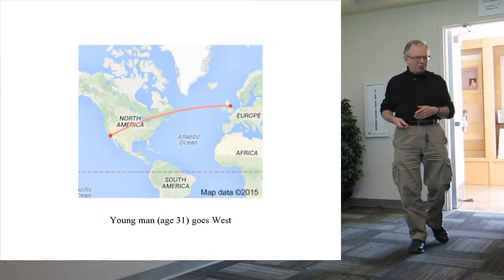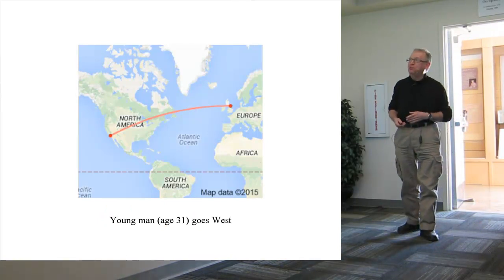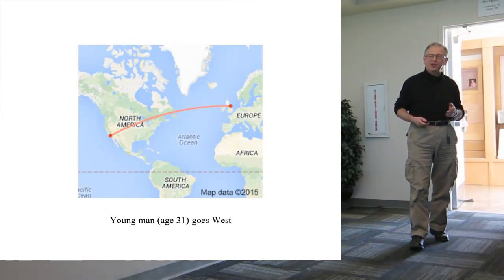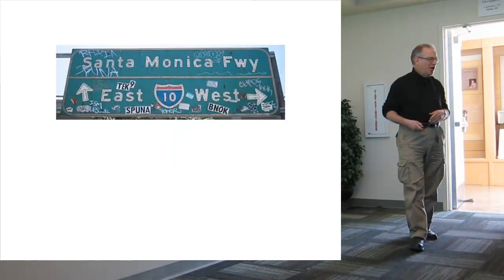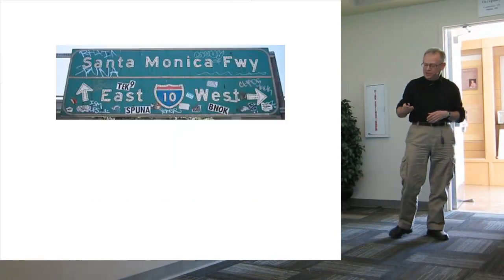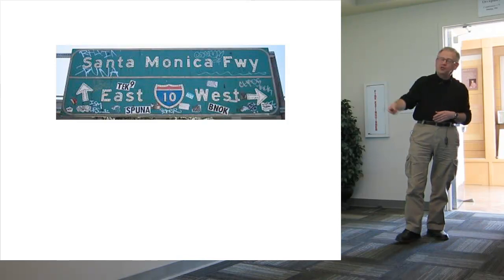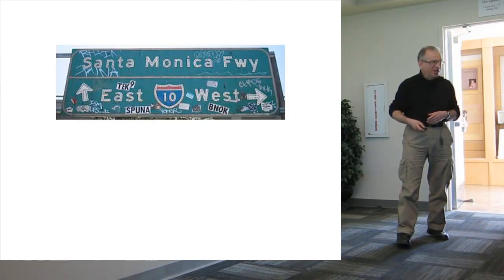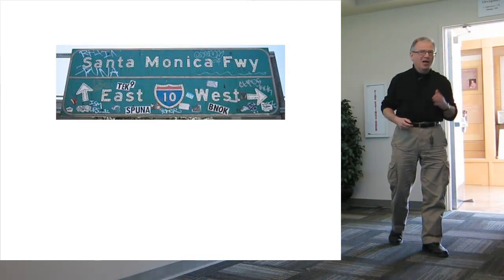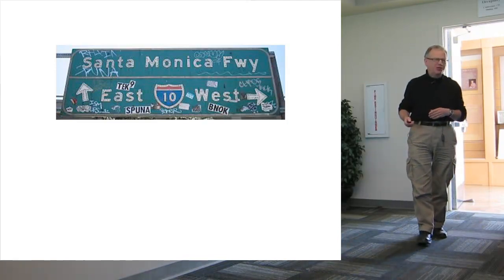It was therefore a surprise to me when in my early 30s, I did actually move west from my home in England to California, initially to Los Angeles. I would be driving on the freeway — the signage clearly telling me which way is east and which way is west — and I would consistently go the wrong way. I would think something was in the east, but in fact it was in the west.